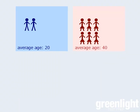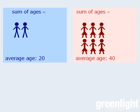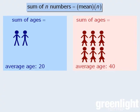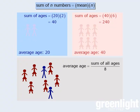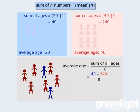To determine this, let's find the sum of the ages of each group using the same formula. For the men, the average age is 20 and there are now 2 men, so the sum of their ages is 20 times 2, which is 40. Applying the same formula to the women, the sum of their ages is 240. When we combine the two groups, the average age of the 8 people is the sum of all eight ages divided by 8. The men's ages add to 40 and the women's ages add to 240, so the average age of the combined population is 35.